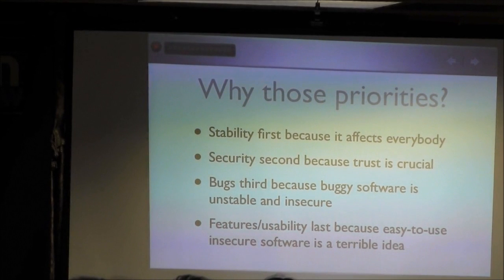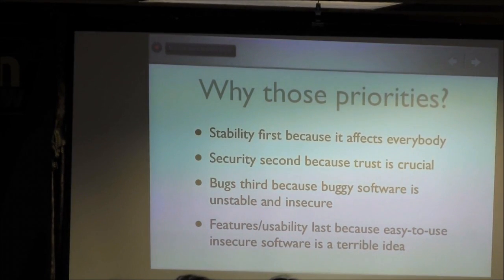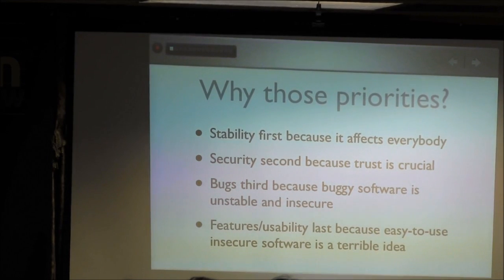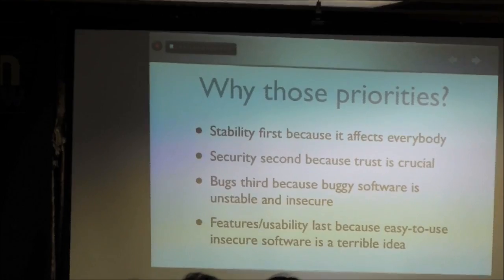Stability first because it affects everybody — who cares if your wallet is secure if you can't spend the money in it? If the Bitcoin network just implodes, the whole thing grinds to a halt. Security second because trust is crucial. We've had a lot of incidents in the last few months that have really shaken trust. But core Bitcoin has remained trustworthy — the core payment system network has continued to chug along. It's quite amazing that we have this bottom-up network where nobody is running it: it's all the miners, all the merchants, all the geeks cooperating worldwide, and it works.